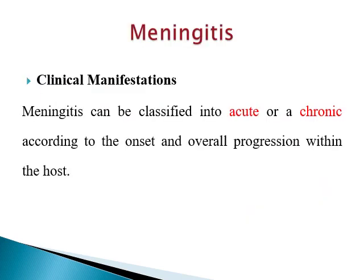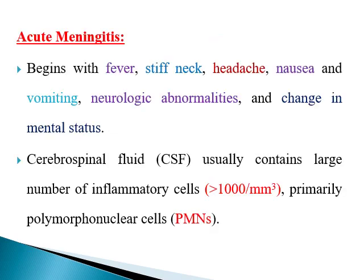Meningitis can be presented clinically in two forms: either acute or chronic, depending on the onset and the overall progression within the host. With acute meningitis, the symptoms develop acutely and consist of fever, stiff neck, headache, nausea and vomiting, neurologic abnormalities, and change in mental status in the form of drowsiness, stupor, or even coma.